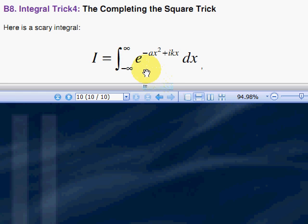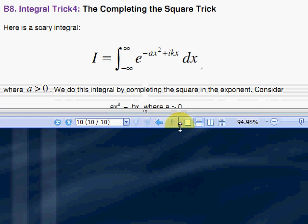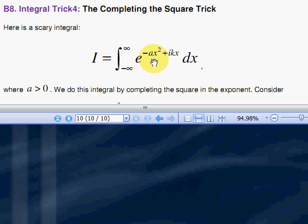This is a very scary one: e to the minus ax squared plus ikx. Notice that a must be greater than zero, so e to the minus ax squared behaves itself, doesn't blow up to infinity, and stays finite, and we get a finite result for the integral.